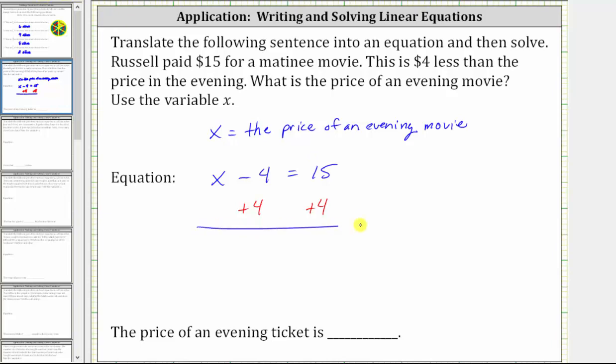Simplifying. On the left, negative four plus four is zero. The left side simplifies to x. We have x equals 15 plus four, which is equal to 19.